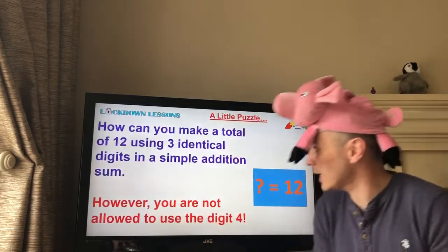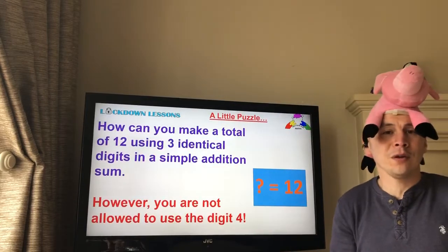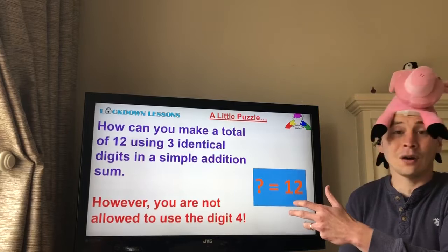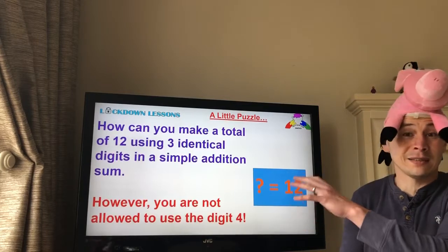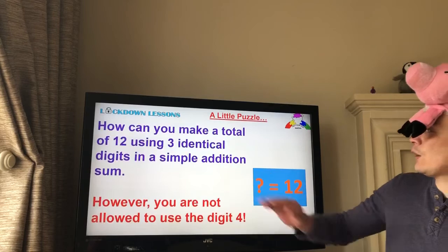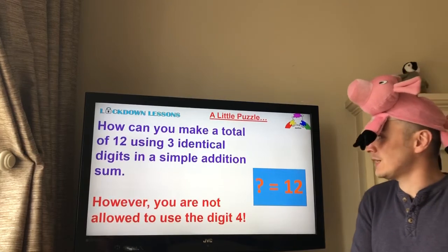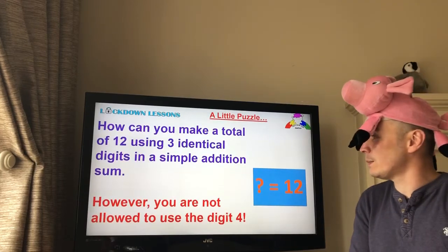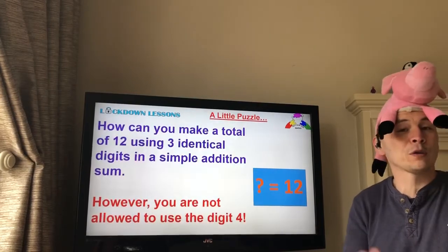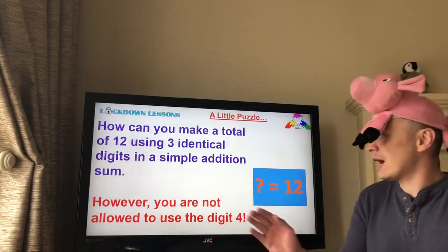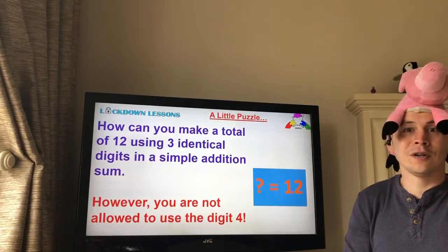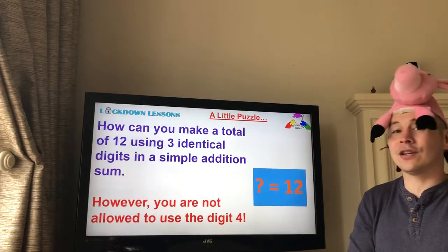Just to give you a taster, I've got a little puzzle for you — please put your answers up on Facebook. The challenge is: how can you make a total of 12 using three identical digits in a simple addition sum? Now you're probably thinking of four, because four plus four plus four is 12. However, you are not allowed to use the digit four. So how can it be done?